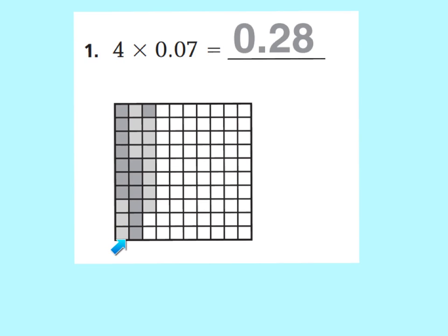Because we have 10 hundredths, which is 1 tenth, another 10 hundredths which is 2 tenths — see right there, 2 tenths — and then we have 8 more hundredths. So if you count it up, you have 28 hundredths. And remember, this one whole means a whole, and only 28 hundredths is shaded in out of one whole.